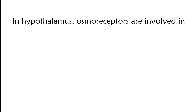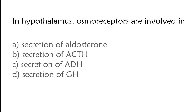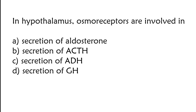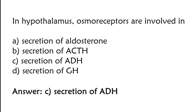In the hypothalamus, osmoreceptors are involved in: secretion of aldosterone, secretion of ACTH, secretion of ADH, or secretion of GH. The correct answer is option C. In the hypothalamus, osmoreceptors are involved in secretion of ADH.